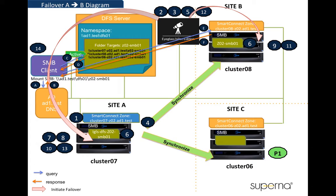One thing to note: prior to executing this failover from A to B, we need to do this P1 preparation step. This is to delete any existing SyncIQ mirror policies from C to A on the same target path as the one we are failing over from A to B. Without this step, if there are existing mirror policies from C to A, the failover process from A to B will fail due to overlaps in the same mirror target path.